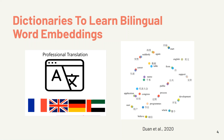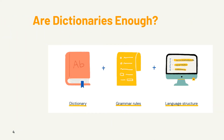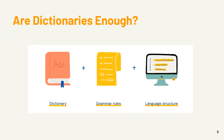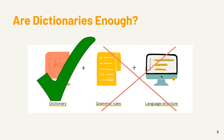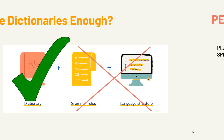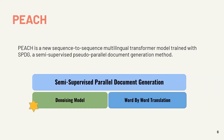To solve the issue of human annotation, dictionaries can be used as an approach, as in Duan et al., to learn bilingual word embeddings. But are dictionaries enough? Dictionaries just give us the mapping between one language and another. However, we lose information on language structure and grammar rules. So to solve this issue, Pitch is introduced.